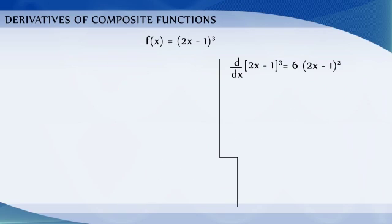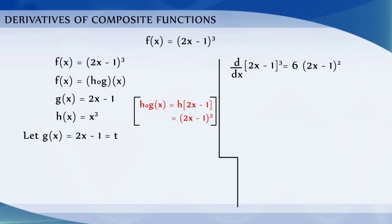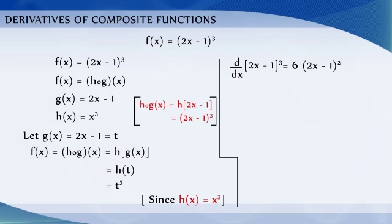The given function f(x) = (2x − 1)^3 can be written as f = h ∘ g(x), where g(x) = 2x − 1 and h(x) = x^3. Let g(x) = 2x − 1 be denoted as t. Then f(x) = h(g(x)) = h(t) = t^3, since h(x) = x^3. Therefore, f(x) = t^3.